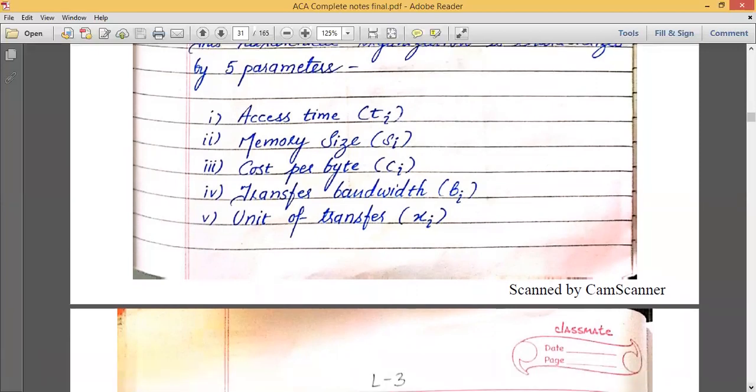The fourth thing is transfer bandwidth. Every memory has a transfer bandwidth. You all have observed that whenever you are copying data from USB to hard drive in the first scenario, and whenever you are copying data from hard drive to memory, in both scenarios bandwidth is different, speed is different. In one case, your data will be transferred quickly and in one case data will be transferred slowly. So transfer bandwidth is different for every memory. How many bytes per second or bits per second transfer is different from every memory.